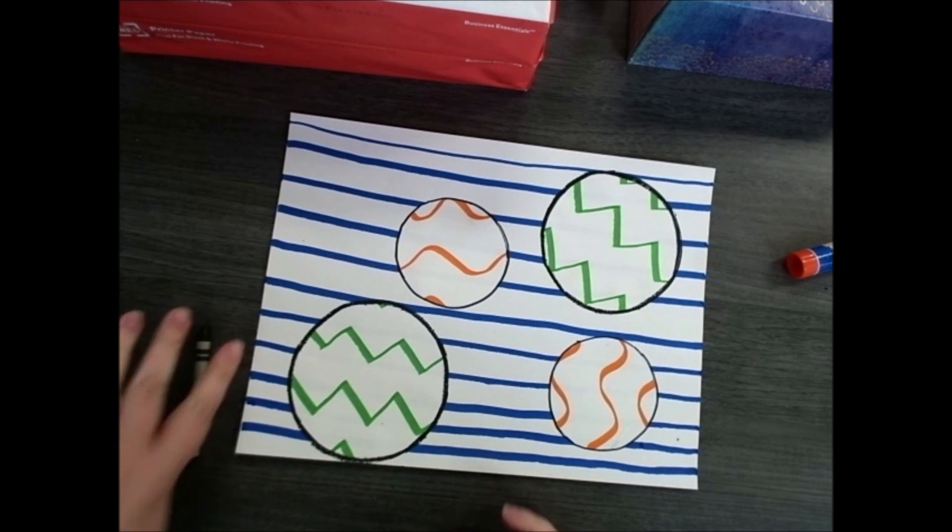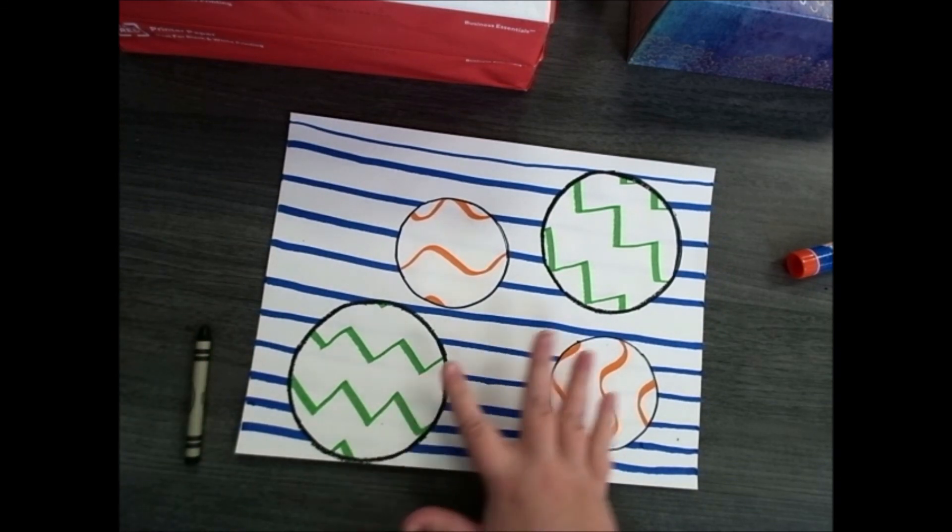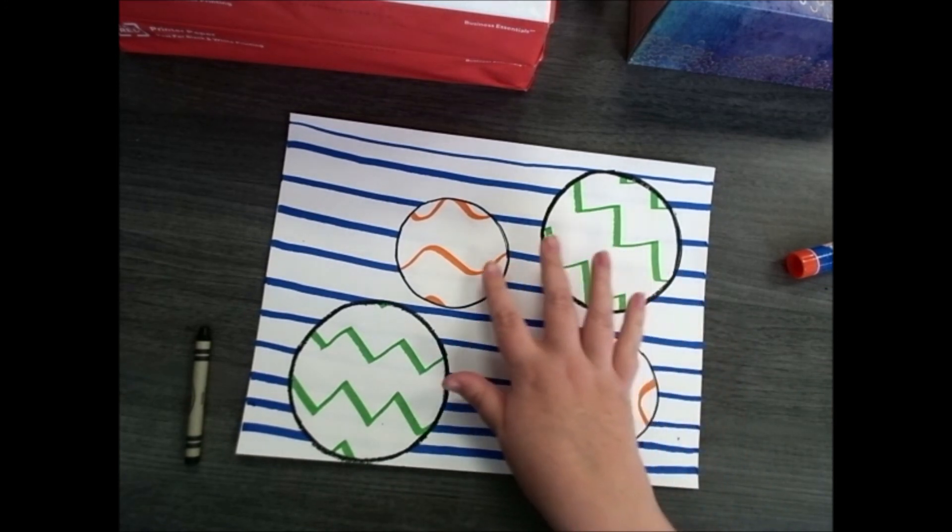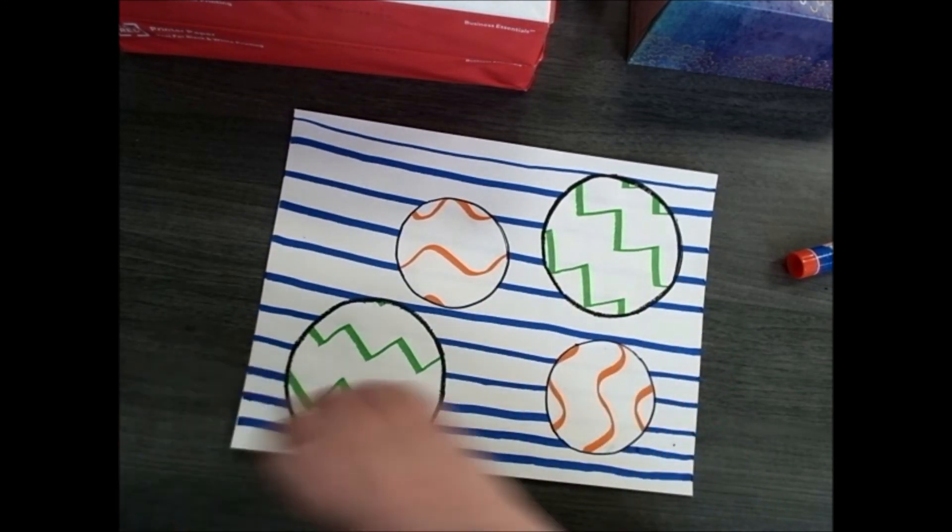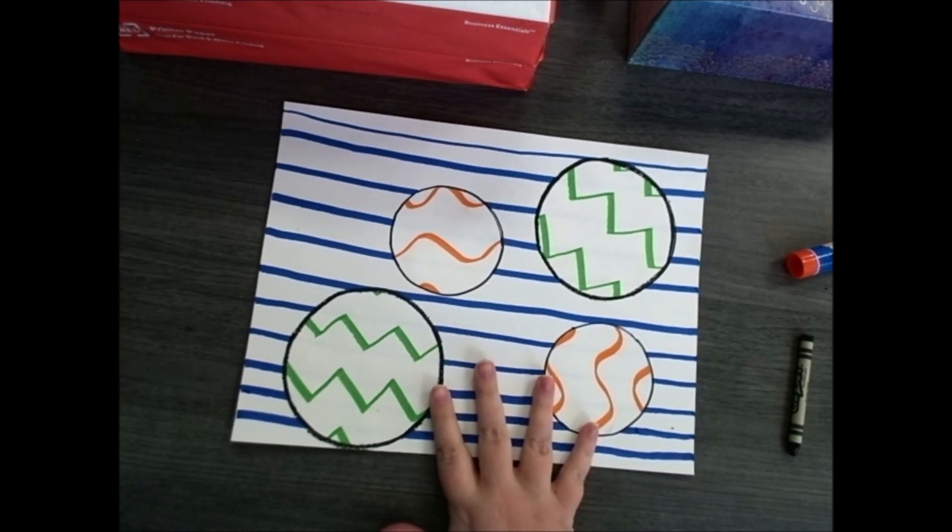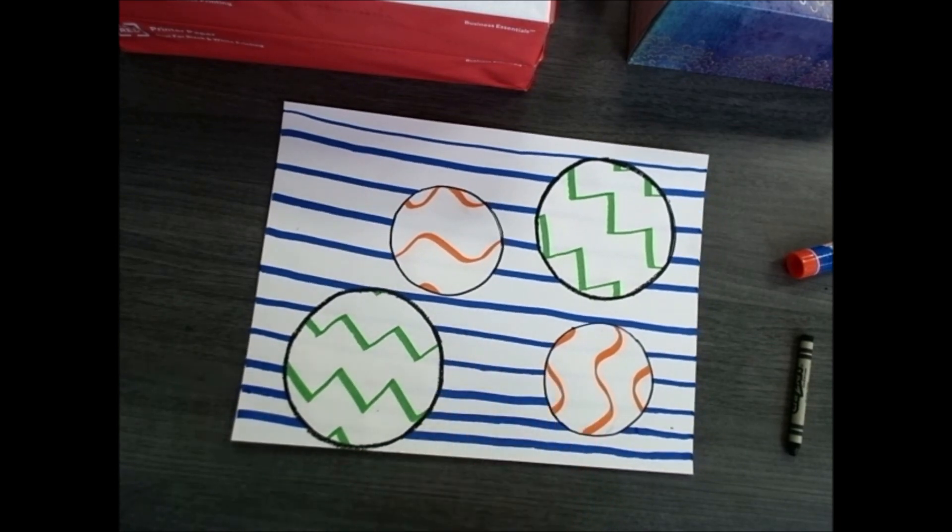All right, so now that I'm done, we have even more contrast. So we have a thick line around both of our big bubbles, a thin line around our smaller bubbles, and then we have all the other types of contrast. We have our texture contrast, our color contrast because we have lots of different colors, our shape contrast, lots of different contrasts.